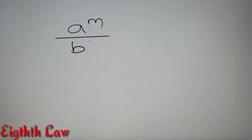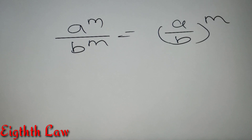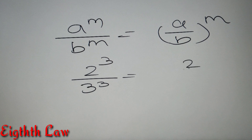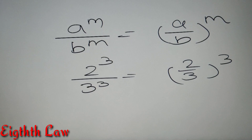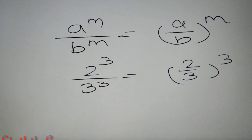The eighth and last law says that if we have A raised to power M divided by B raised to power M, the result is A by B whole raised to power M. For example, 2 raised to power 3 divided by 3 raised to power 3 equals 2 by 3 whole raised to power 3. These last few laws are especially important when calculating or simplifying certain values. Now let's move on to the applications of indices.